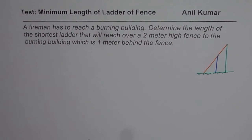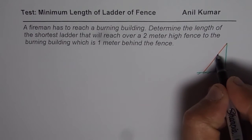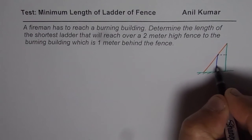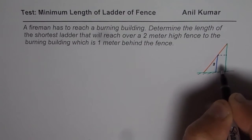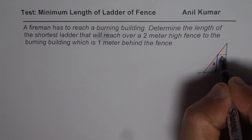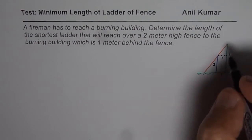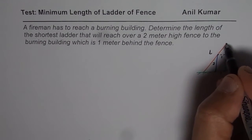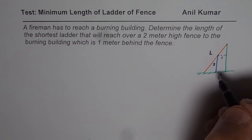So in a way we can see it like this. Let us say that is the fence whose height is 2 meters and it is 1 meter ahead of the building. So this portion will also be 1 meter. We need to find the length L of the ladder. That is the question.